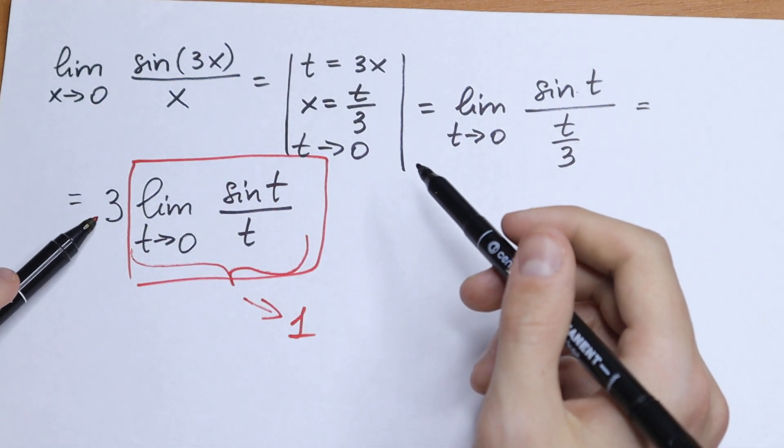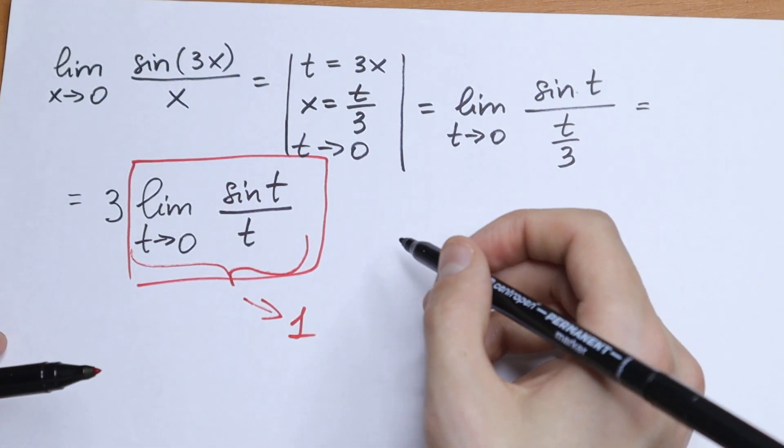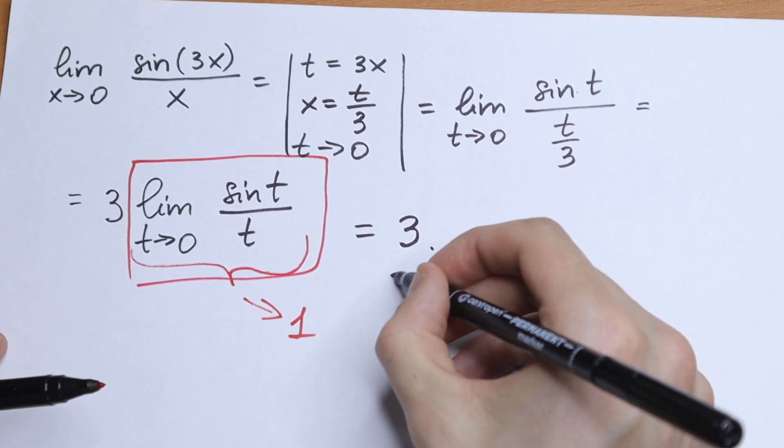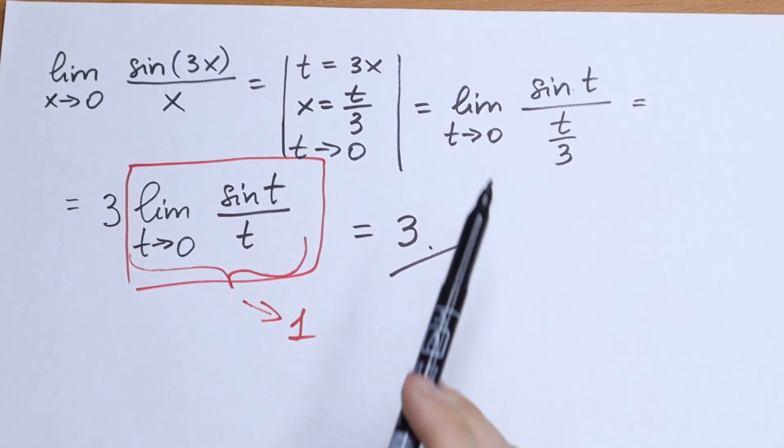And the last step, we need to multiply 3 by this 1. And we will have that our limit is equal to 3. And this is our answer.